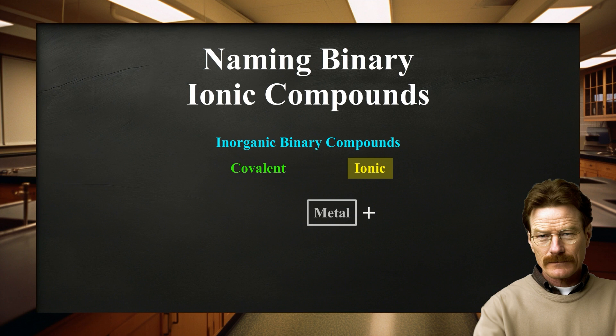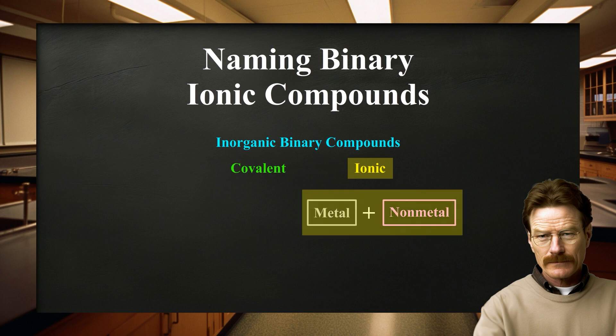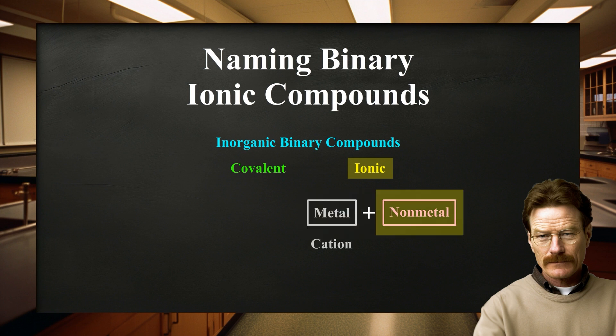If one of the elements is a metal and the other a nonmetal, the binary compound is usually made up of ions — that is, it is a binary ionic compound. Binary ionic compounds contain a positive ion, also known as a cation, and a negative ion, also known as an anion.